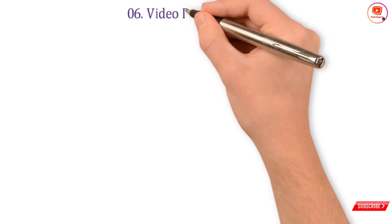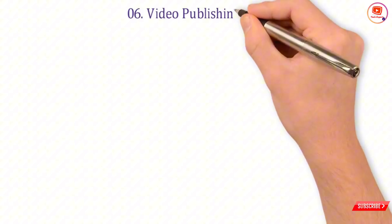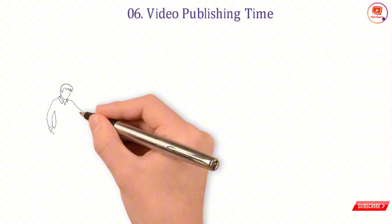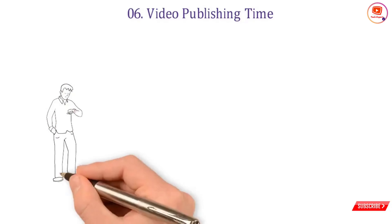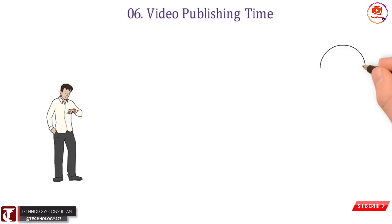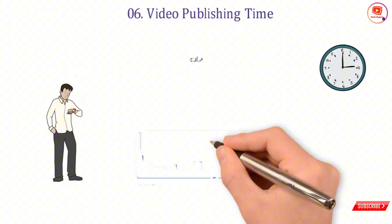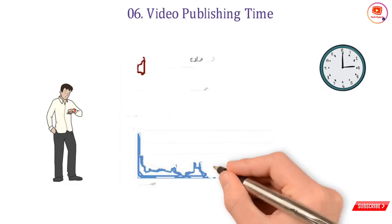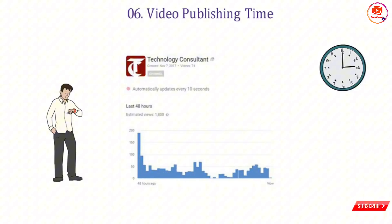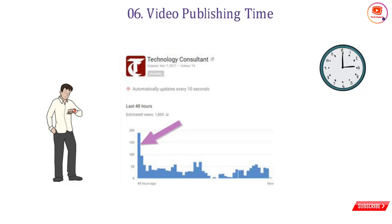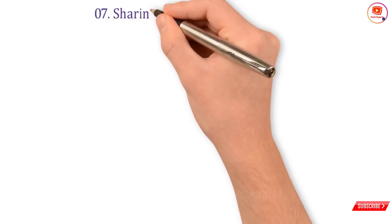Number six — video publishing time: video publishing time is very important. Before uploading, go to Creator Studio and check your last 48 hours view report. Check which particular hour you have the most views, then select that hour and publish your video at that particular time. By adopting this method, your video will gain a lot of views immediately after upload.